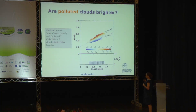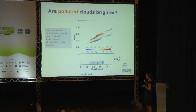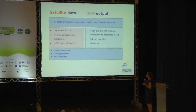This theoretical model is based on realistically varying conditions and captures the essence of the cloud albedo effect parameterization in climate models, but it's still a simplification. So we're going to increase the level of sophistication and go to satellite observations and GCM output.